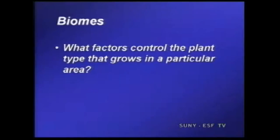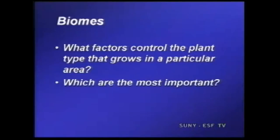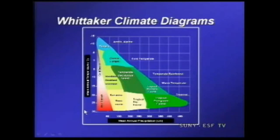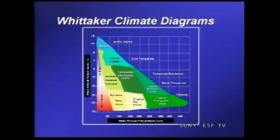What are the factors that control the plant type that grows in a particular area, and which are the most important? Some of the most important are temperature and precipitation, but also insolation, or sunlight. This is called a Whitaker diagram — you can see gradients graphed out here, with precipitation on the x-axis and temperature on the y-axis. Within it are different types of biomes. A biome is a very large area characterized by dominant vegetation patterns or climate patterns, and each set of gradient conditions has its own type of biome which predominates.